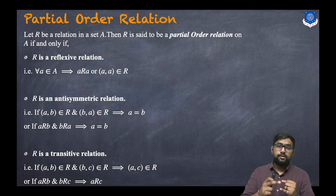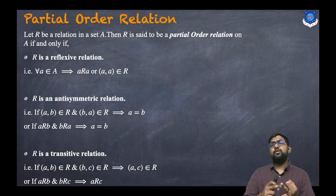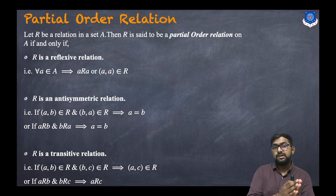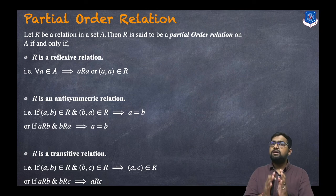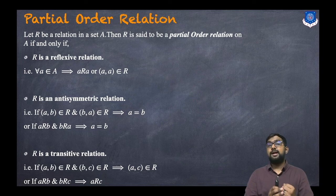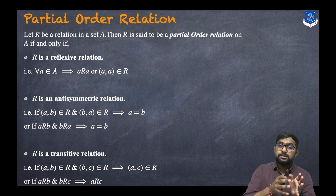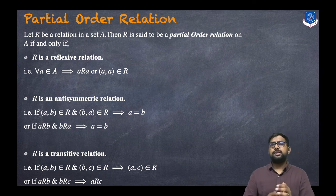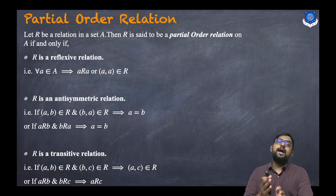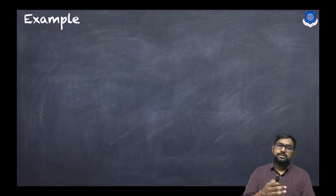So for a partial order relation, R has to be reflexive, anti-symmetric, and transitive. The main difference between equivalence relation and partial order relation is: in equivalence relation R has to be reflexive, symmetric, and transitive, whereas in partial order relation R has to be reflexive, anti-symmetric, and transitive.